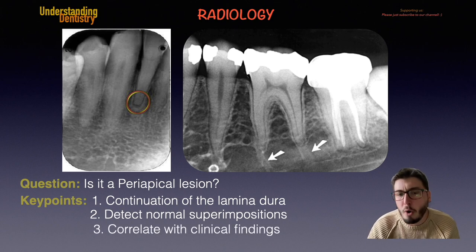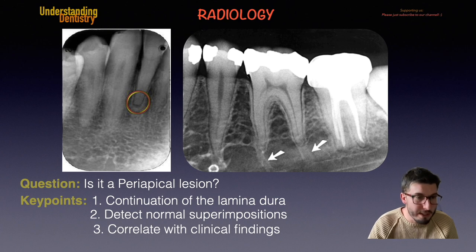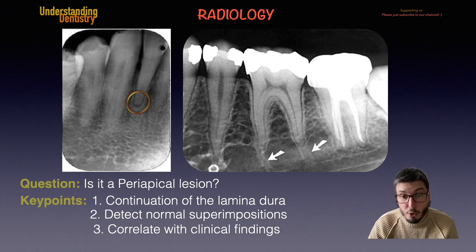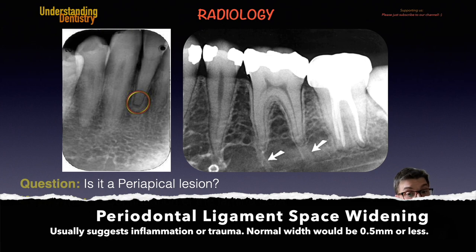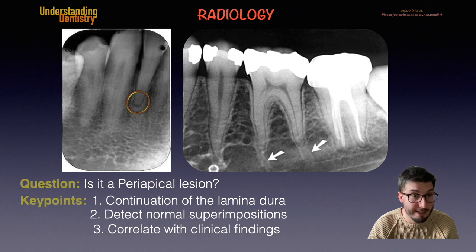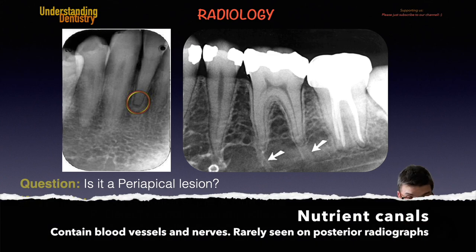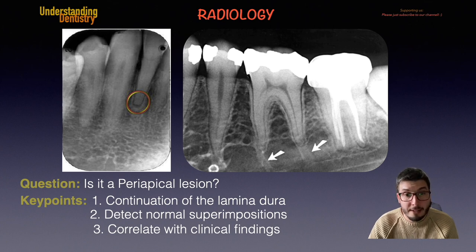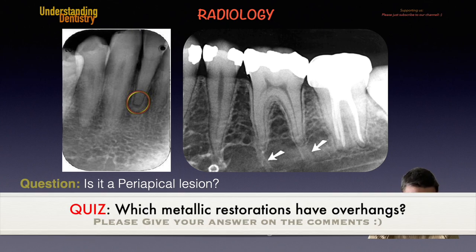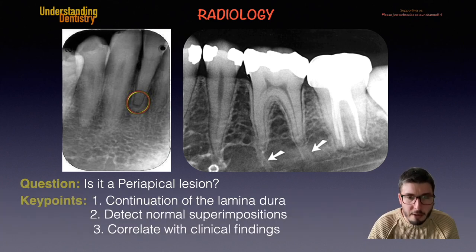The third key point is to always correlate with clinical findings and the patient's history. On the left side of your screen, we have periodontal ligament space widening — the lamina dura is still visible, so it's not a periapical lesion yet. On the right side, we see nutritious canals, which is also normal anatomy. It's rare to see these on periapical radiographs, but it can occur. We need to know the anatomy and correlate with findings — for example, are these teeth responding to percussion with pain? This will factor into our diagnosis.